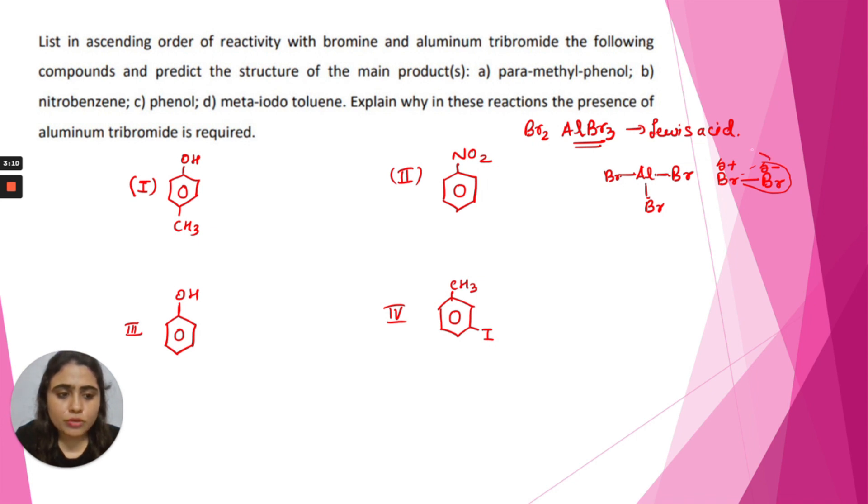So this partial negative bromine ion will attack the electron-deficient center of the aluminum ion and it will form AlBr4- and bromonium ion will be released. Now we will see how this bromonium ion will attack these four different products.